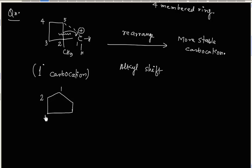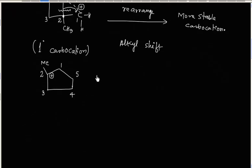The ring is numbered 1, 2, 3, 4, 5. Carbon number 2 contains a methyl group, so it will have a methyl group attached. There is a loss of bond to carbon number 2, so we will have a positive charge on carbon number 2. Finally we have a 3° carbocation with a 5-membered ring.